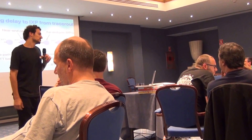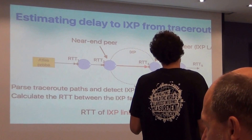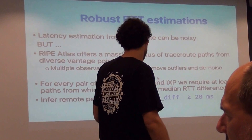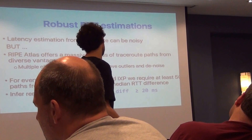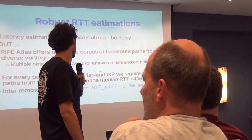The main methodology is to use the huge corpus of Atlas traceouts and calculate the RTT differences between IXP hops and the near-end hop between the far and the near-end peering. Traceouts have a lot of noise, especially when we subtract RTTs. But the fact that Atlas has so many traceouts and vantage points allows us to filter out this noise and remove outliers. We get basically the median RTT difference over pairs of IPs and IXPs for which we have at least a fixed number of observations.